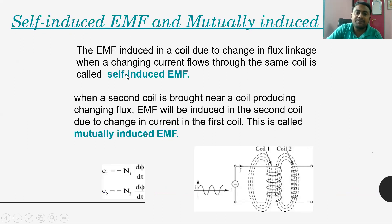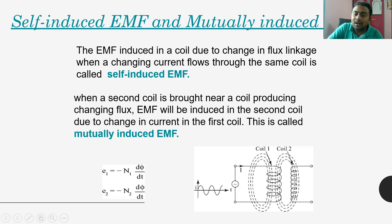Because of this, the induced emf is classified into two things: self-induced emf and mutually induced emf. Self-induced emf means the current flowing through coil one produces emf in coil one itself. Mutually induced emf means the current flowing through coil one causes emf generation in coil two. To repeat: current in coil one causing emf in coil one itself is self-induced emf; current in coil one causing emf in coil two is mutual induced emf.